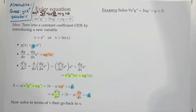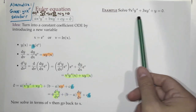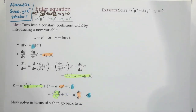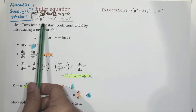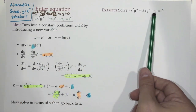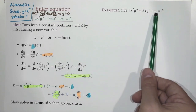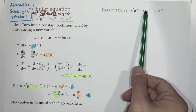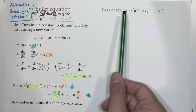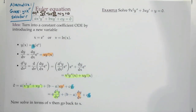Let's do an example: solve 9x²y'' + 3xy' + y = 0. First question: is this an Euler equation? Yes — it has the right form. Essentially, powers of x go up with your derivatives: no derivatives, no x; one derivative, x to the 1; two derivatives, x to the 2.